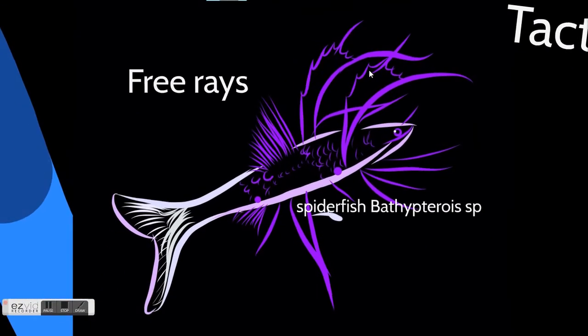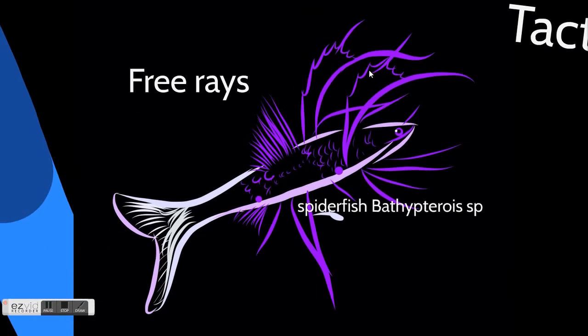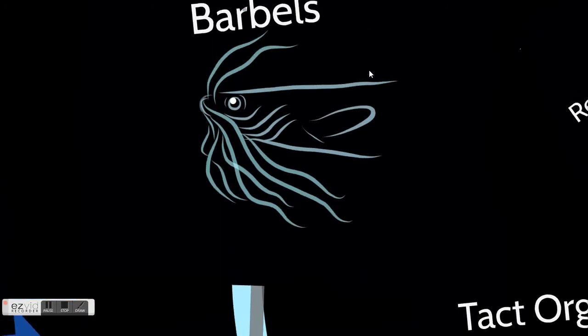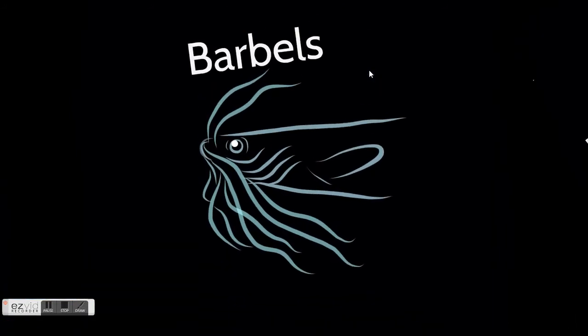Other ones can be barbels. These are epidermal outgrowths, tentacular in form, that in fish are situated on the head, frequently near or around the mouth. They help locate prey in low light conditions.